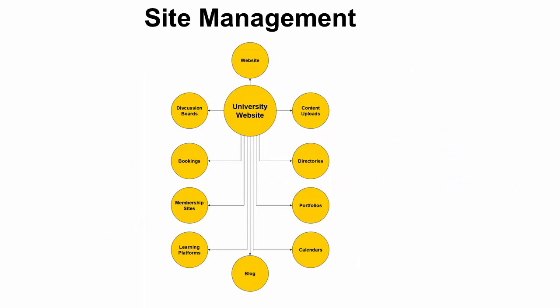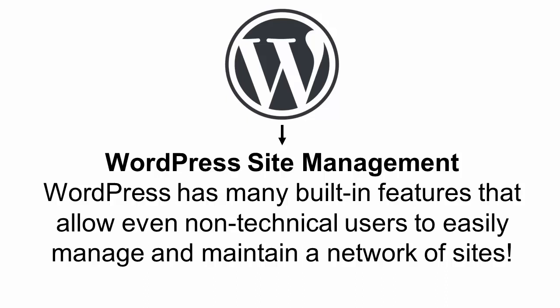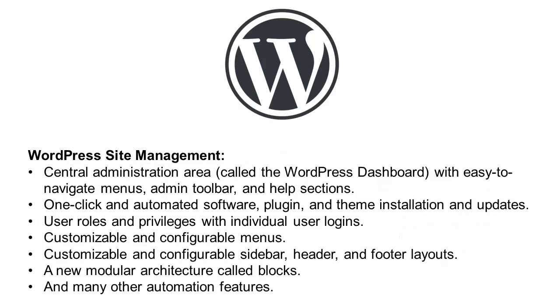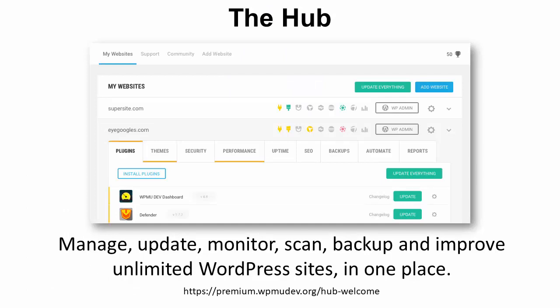The other challenging aspect of running multiple sites is site management — who is going to manage and look after all the sites in your network? WordPress comes with many built-in features that allow even non-technical users to easily manage and maintain a network of sites. These include a central administration area called the WordPress Dashboard with easy-to-navigate menus, one-click automated plugin and theme installation and updates, user roles and privileges with individual user logins, customizable menus, sidebar, header and footer layouts, and a new modular architecture called blocks.